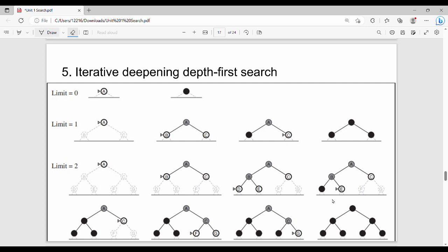Hi friends, welcome back. In this video we are going to go to the iterative deepening depth-first search. So what is the drawback of depth limited search? There is a result at a limited node and there is no result.